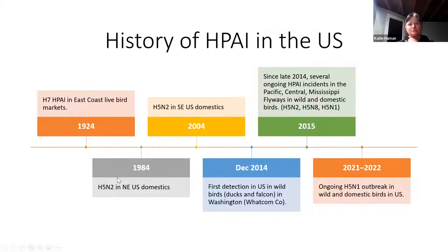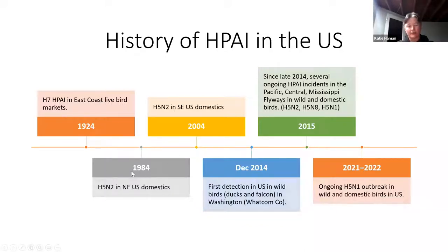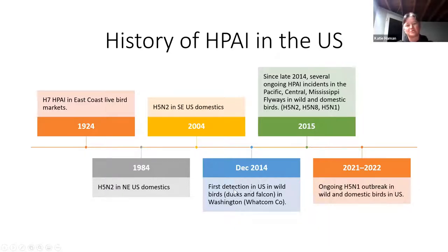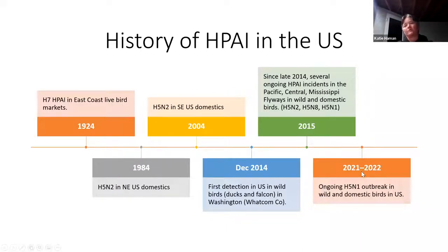A simplified history of high path AI in the United States: the very first documented case was in 1924 on the East Coast in a live bird market. We then had small blips of H5N2 in domestics in the Northeast in the 1980s, more H5N2 in 2004, and then a detection in 2014 — the very first in a wild bird — from Whatcom County, Washington. That was followed by an outbreak that ballooned, and then the big unprecedented ongoing outbreak that mirrors what's happening in Europe.